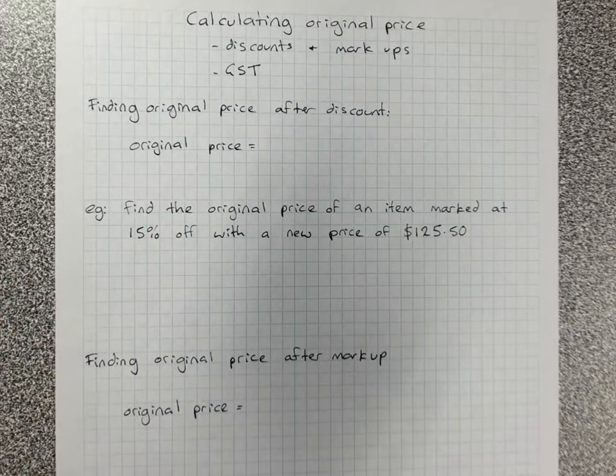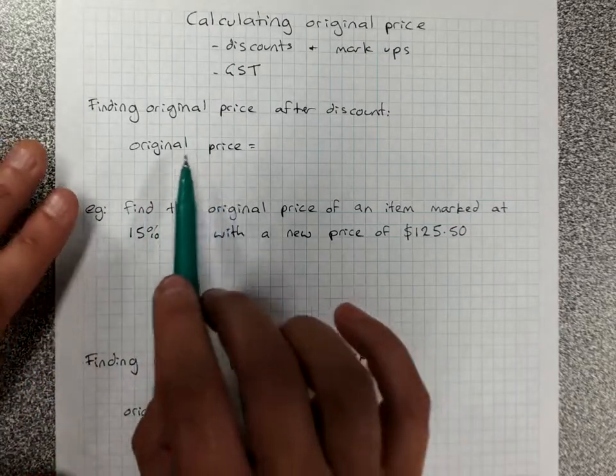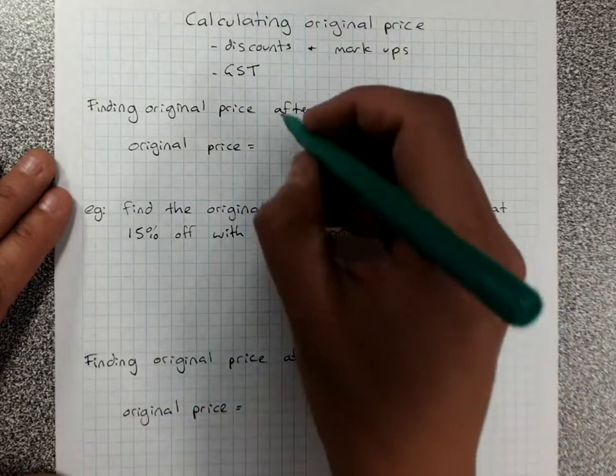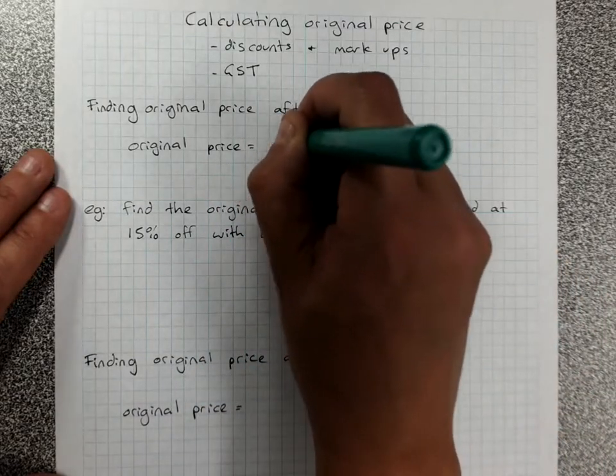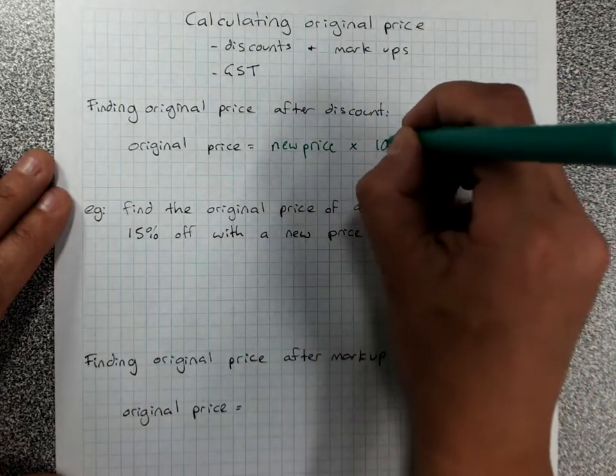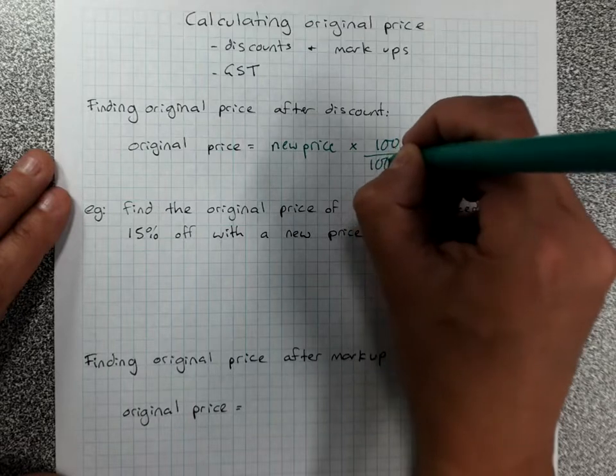There's a couple of different ways of doing this. We can just use a formula that the original price for a percent discount is the new price multiplied by 100 over 100 minus R.